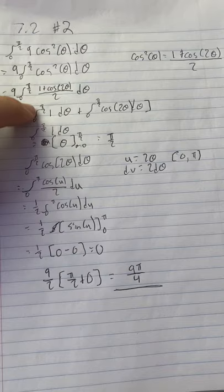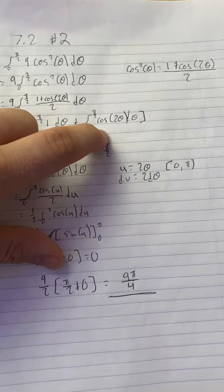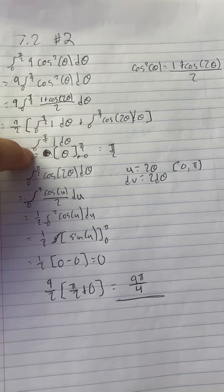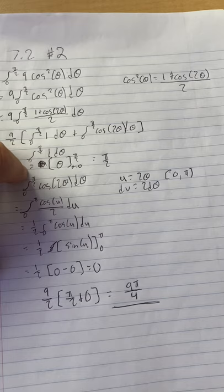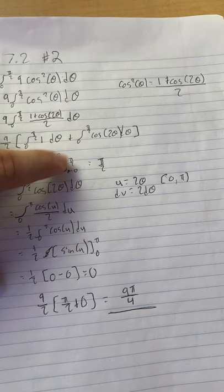From there we separated the 1 and the cosine 2 theta to make their own integrals to solve. Then we got the integral from 0 to pi over 2 of 1 dθ. When we integrate it's just going to be theta, so pi over 2 minus 0, which is pi over 2.